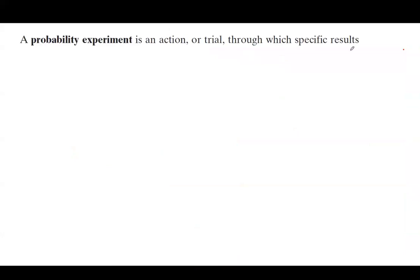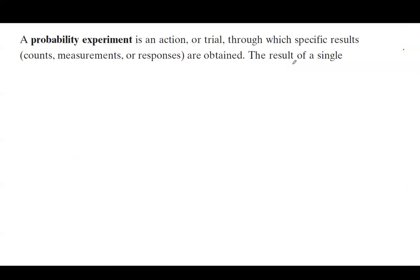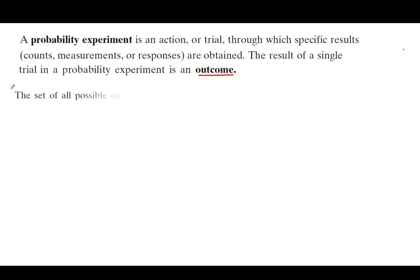A probability experiment is an action or trial through which specific results like counts, measurements, or responses are obtained. The result of a single trial in a probability experiment is called the outcome of that probability experiment. The set of all possible outcomes of the probability experiment is called the sample space.